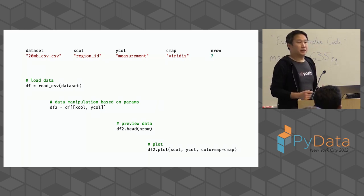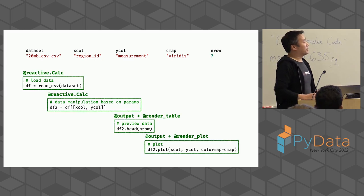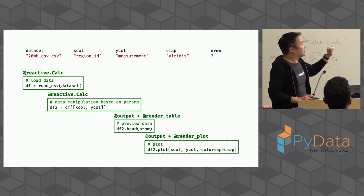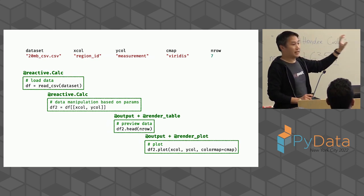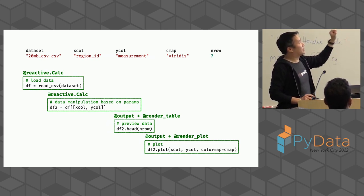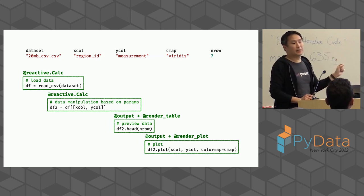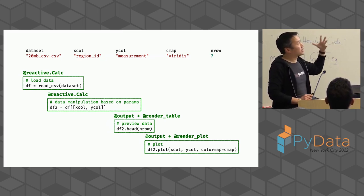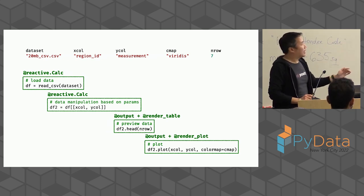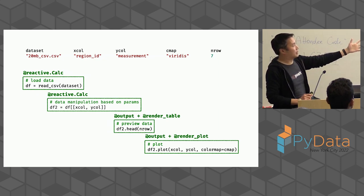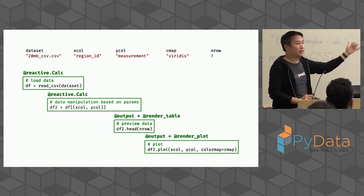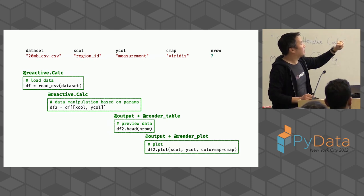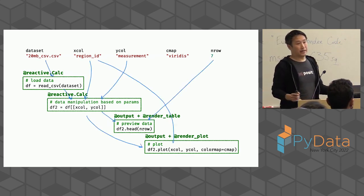Luckily, Shiny does not ask you to draw arrows. All Shiny asks you to do is maintain these chunks of code — you're responsible for the nodes, not the relationships. Each piece of code, you divide into chunks that make sense for your problem, and provide a decorator that tells Shiny a little hint about what the purpose of this chunk is. The intermediate values are reactive calculations — their purpose is to generate a value used elsewhere. Things displayed to the user are marked with @output, plus a hint about what kind of output: table, plot, UI. If you maintain these boundaries and decorators, Shiny will draw the arrows for you, and it will do it perfectly every time.